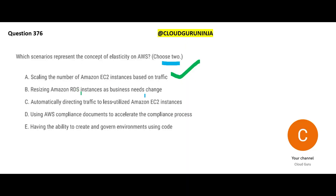Option B — resizing RDS instances. RDS is a relational database; if you want to host Oracle or SQL Server in the AWS world you use RDS. If you resize RDS based on business need, this is again elasticity. You want to store more data so you resize it for more capacity. If your organization has a de-merger and half the data goes to a separate company and separate database, you don't need as much compute and storage, so you resize it to make it smaller. These two are examples of elasticity.